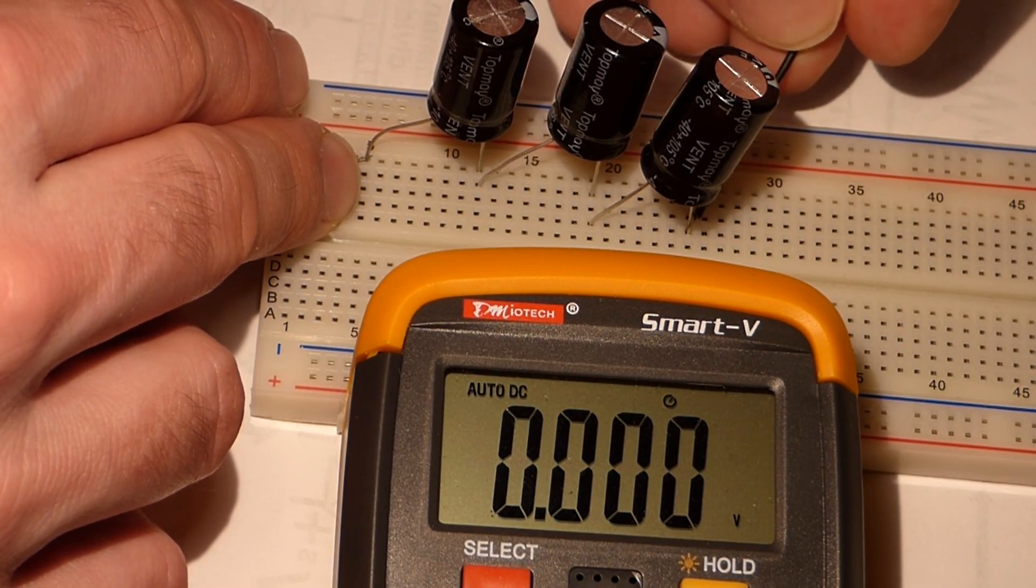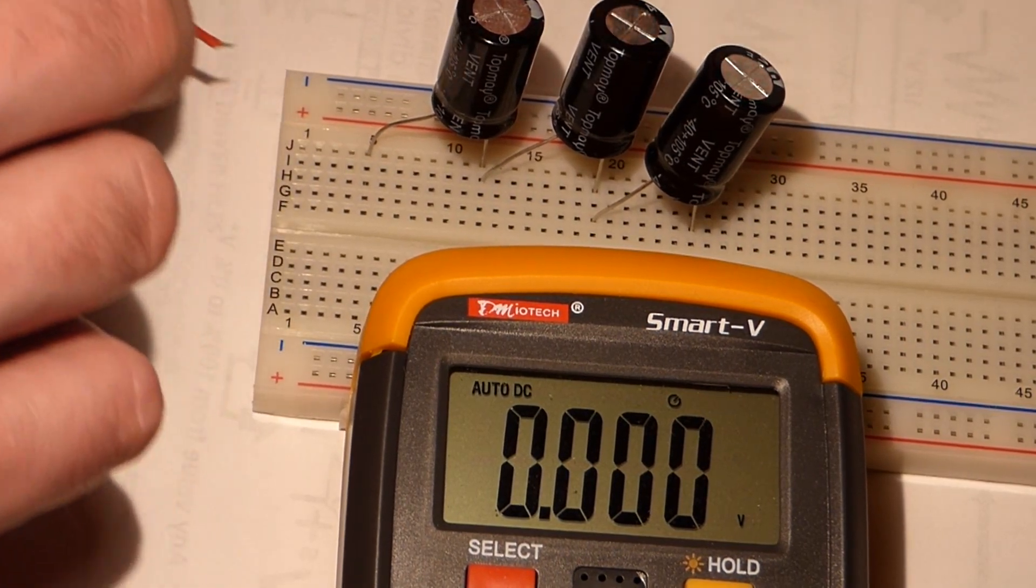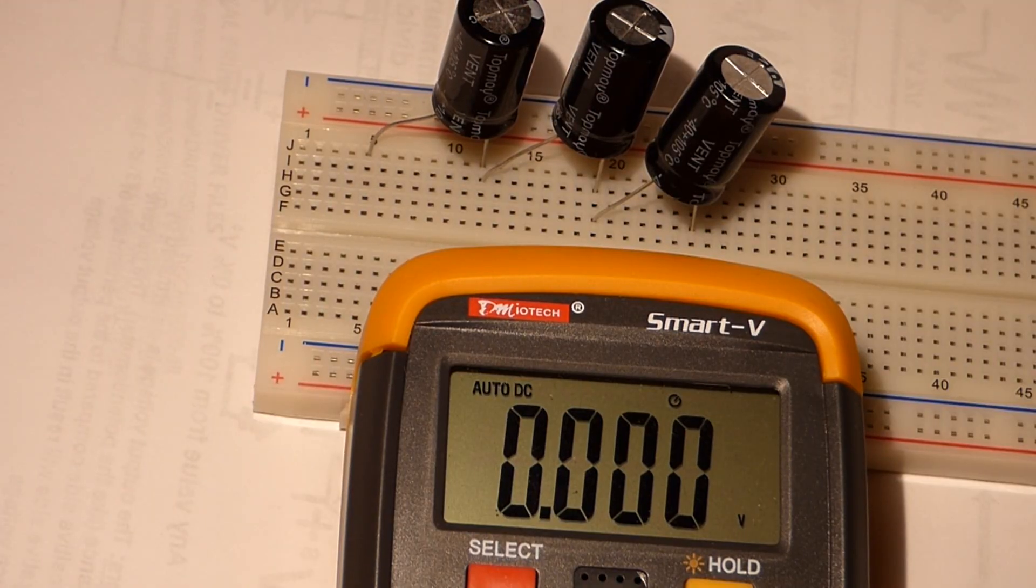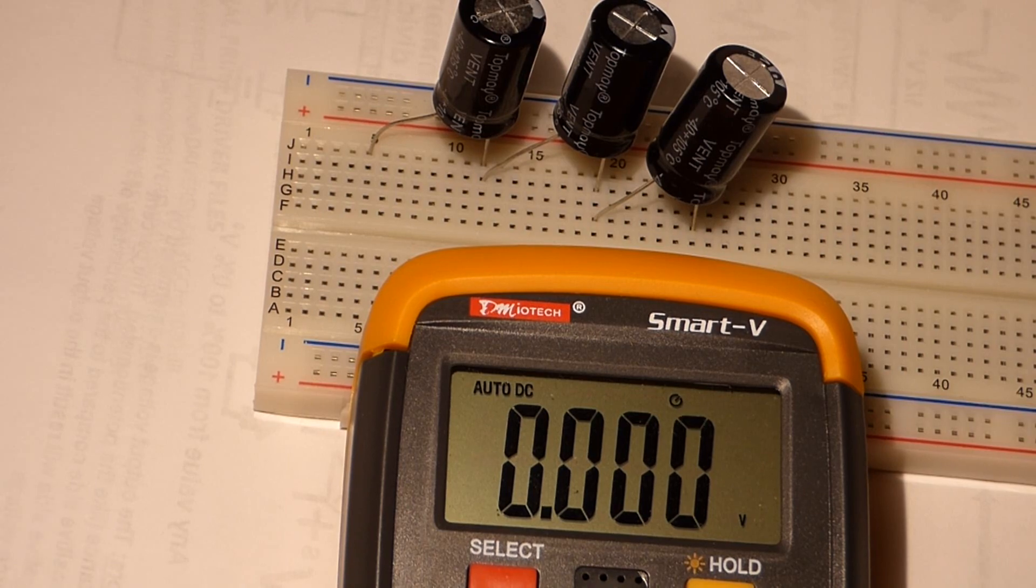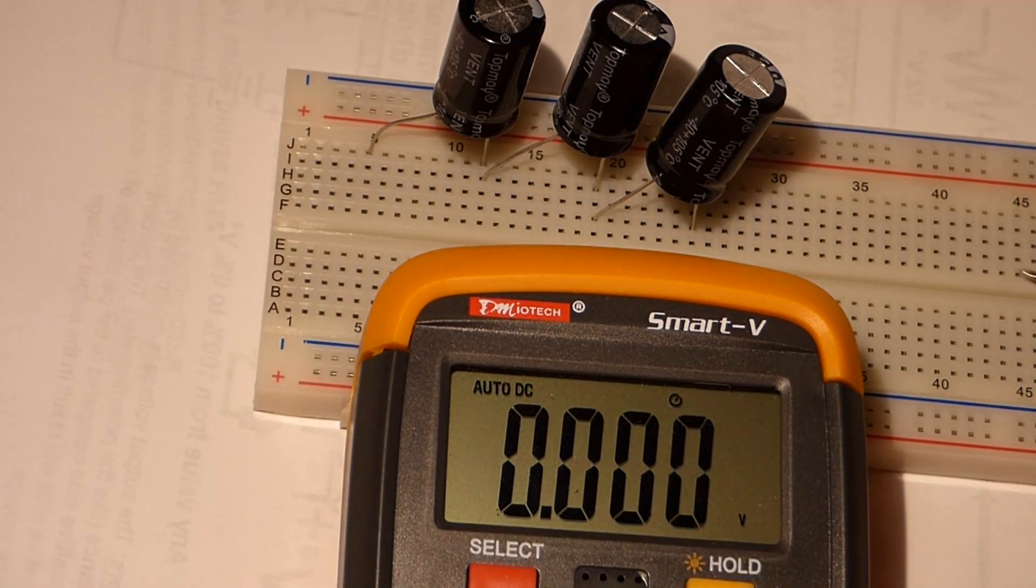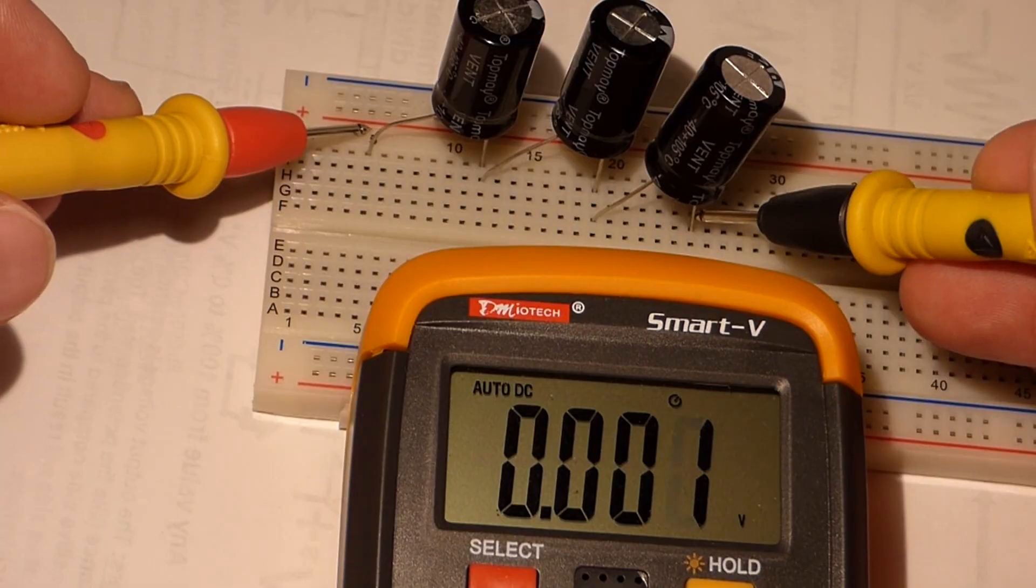Just by connecting the two. Now you can do this with smaller capacitors. If you have large capacitors or super capacitors, don't apply power directly to them like that. But these are small enough, it's okay. So now we will measure the voltage between the three of them.